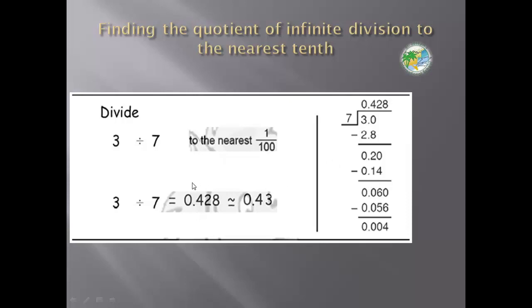The final answer, the quotient, was 0.428. Approximating to the nearest hundredth, where is the hundredth digit? 2. Look at the nearest or next number, 8. It's greater than or equal to 5, it will give 1. Then it will be 0.43.